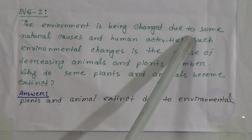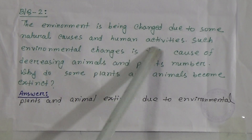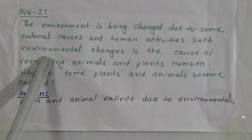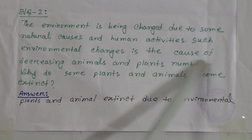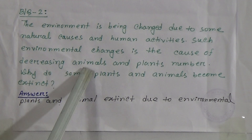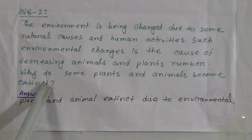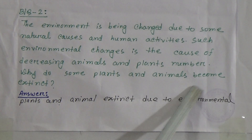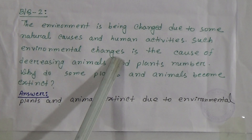Now go to broad question number 2. The environment is being changed due to some natural causes and human activities. Such environmental changes are the causes of decreasing animal and plant numbers. Why do some plants and animals become extinct?